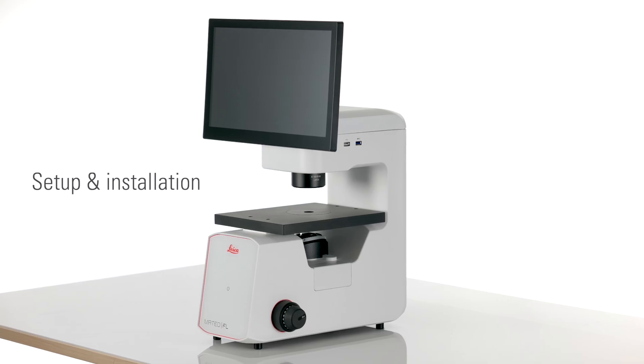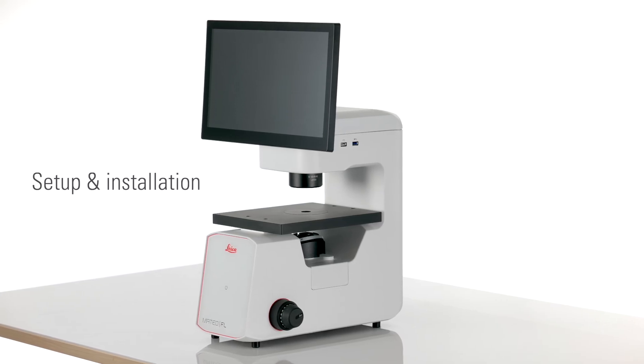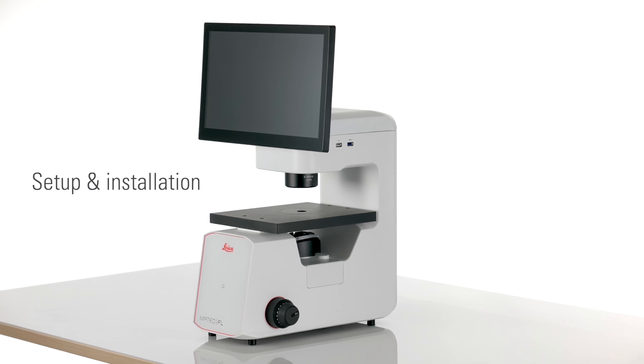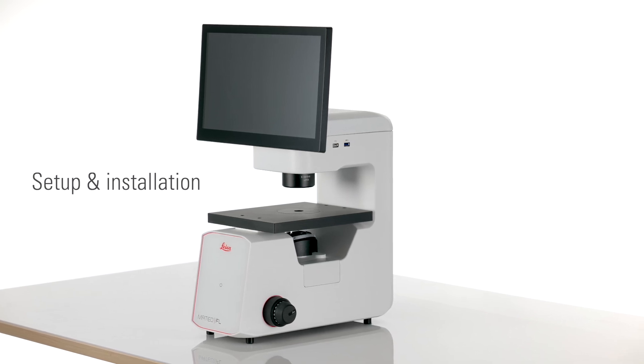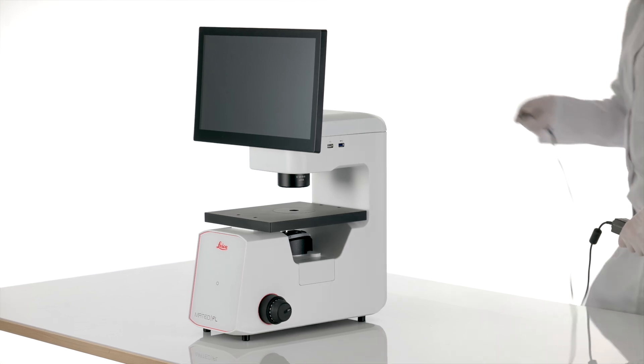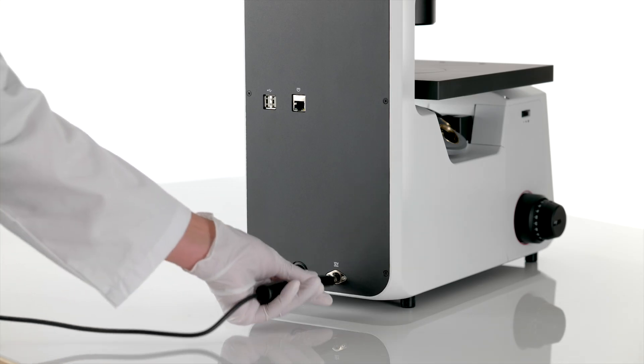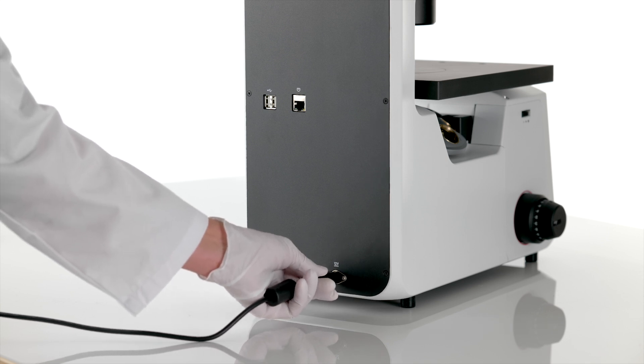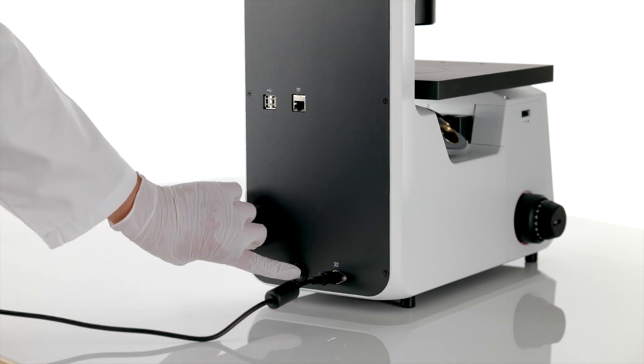And now it's time to start putting your new Mateo FL together. Place the microscope body on a clean, stable surface. Connect the power cord. To turn the device on for the first time, use the power switch located at the back of the instrument.